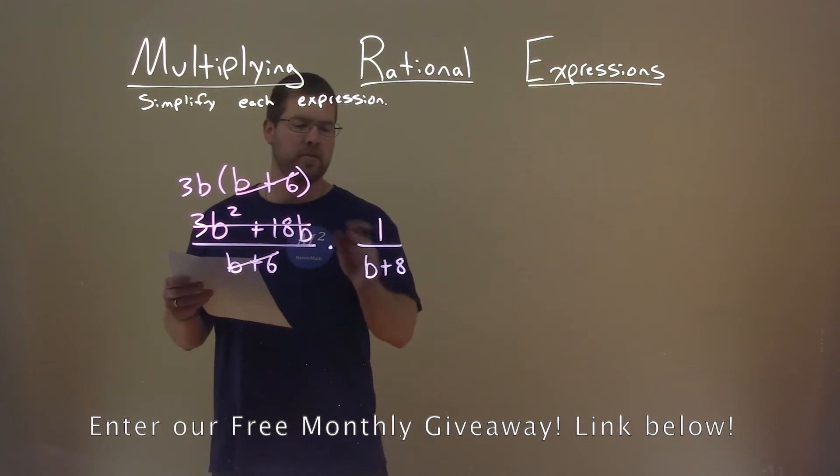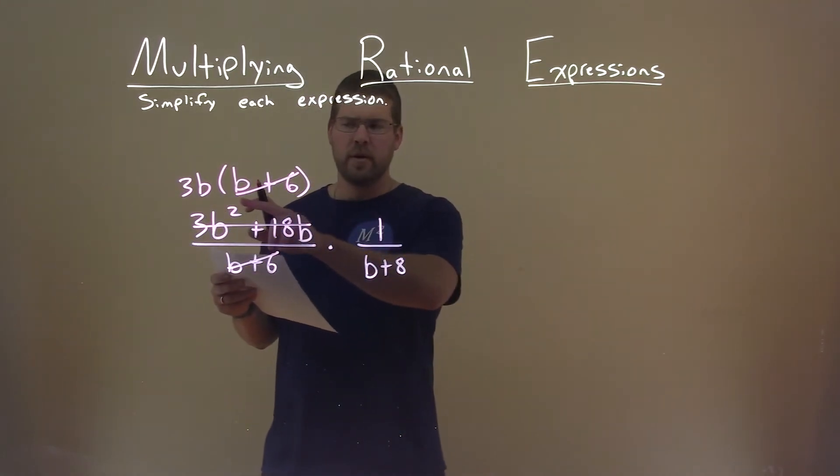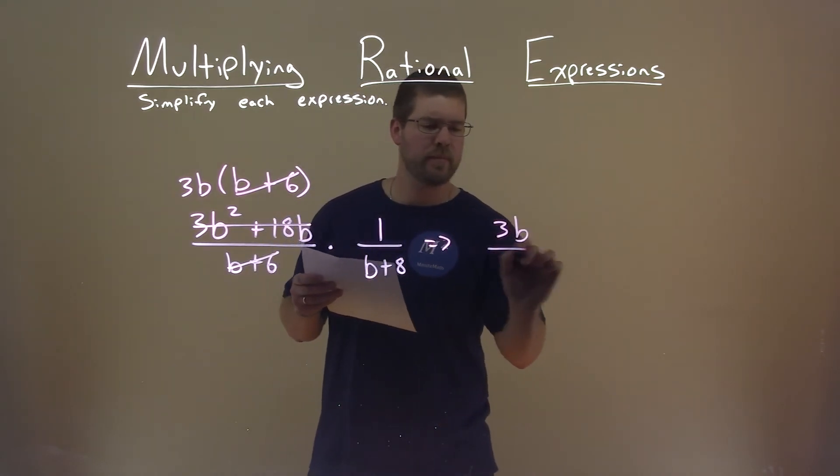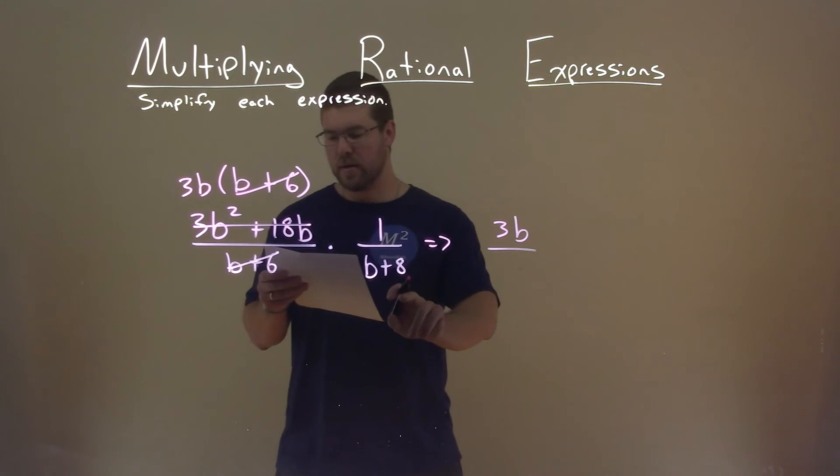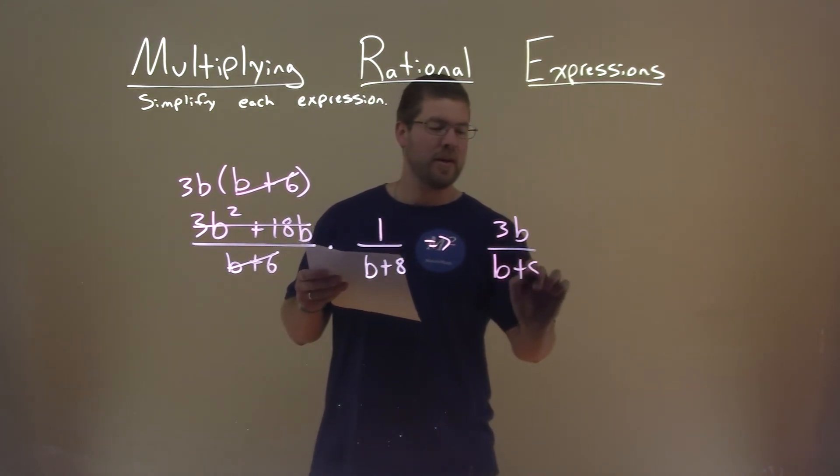Now, nothing else really simplifies from the numerator to the denominator. So let's multiply out the numerator: 3b times 1 is 3b. Denominator, b plus 6 and b plus 8. Well, no b plus 6, it's just b plus 8.